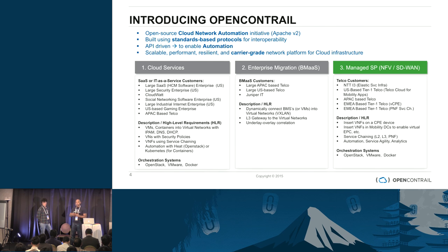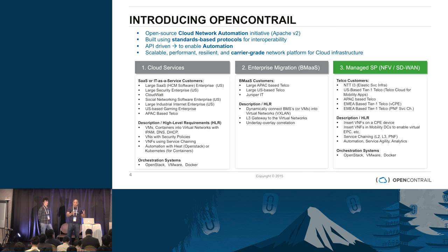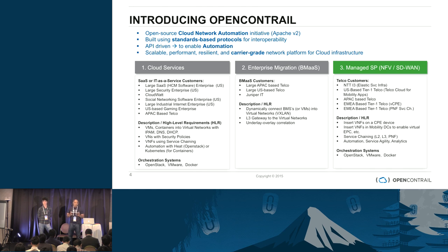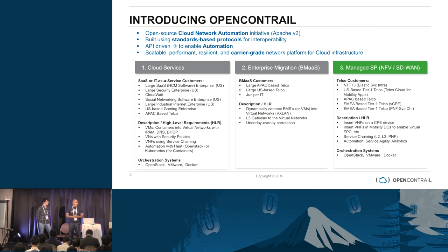They also look at VNF — network functions — wherever necessary. In terms of enterprises, their use case is bare metal as a service, mostly focusing on enterprise migration, moving them from a legacy environment to a more cloud-based environment. One example is Juniper IT, which actually uses this technology, uses OpenStack and uses OpenContrail to enable their build servers. The most relevant for this session is the service providers, and their use cases are varied.